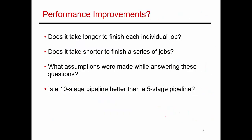Does it take longer to finish each individual job? In what we've discussed, both jobs take the same amount of time — roughly 1,000 picoseconds, whether single-cycle or going through three stages. Does it take shorter to finish a series of jobs after pipelining? Yes. Previously, finishing a billion instructions would take a second. Now you can finish a billion instructions in one-third of a second, because throughput has increased by using a three-stage pipeline.